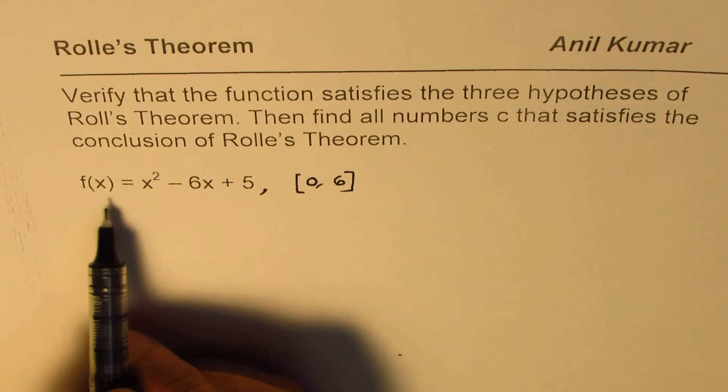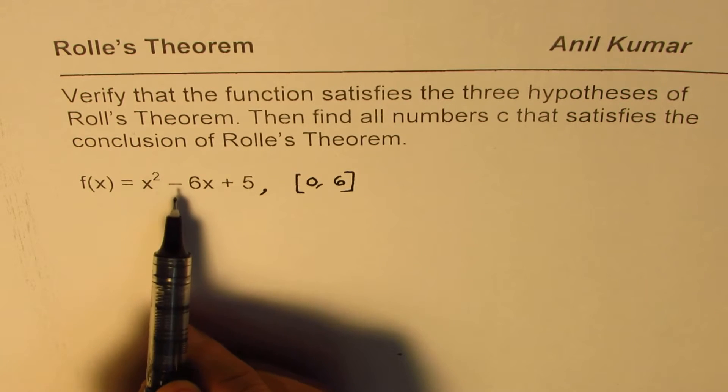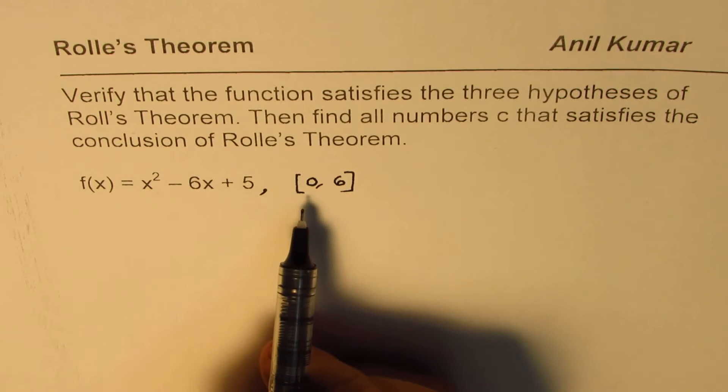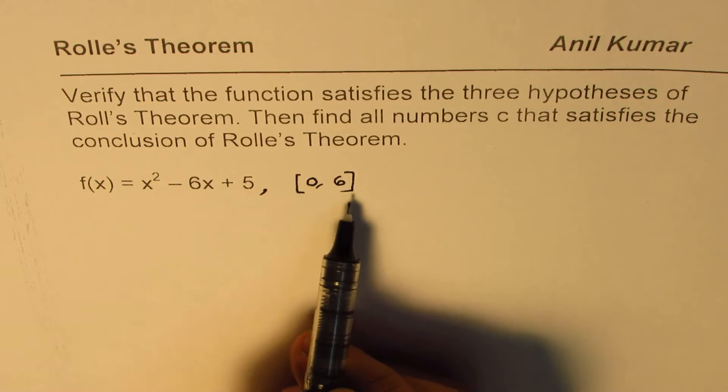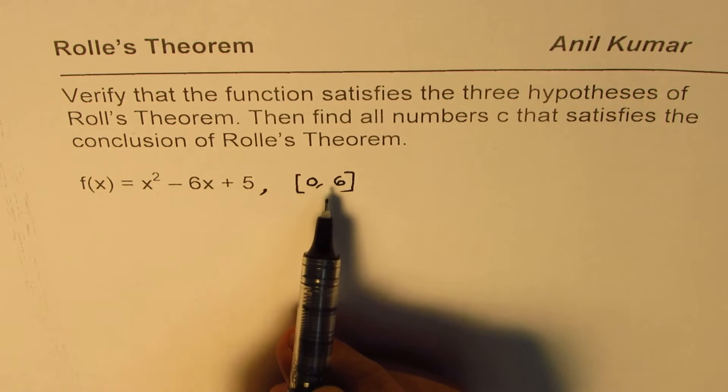We are given a function f(x) = x² - 6x + 5, and we are considering the closed interval [0, 6].